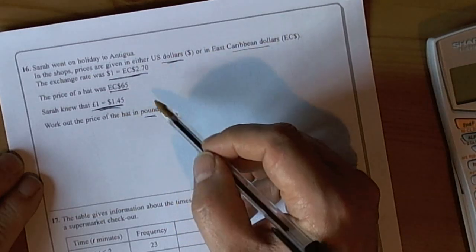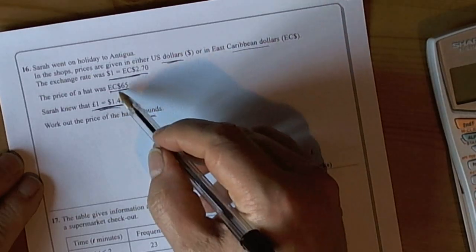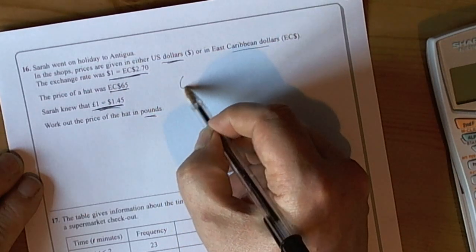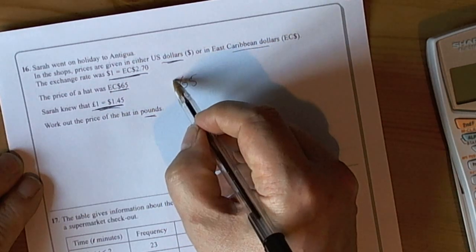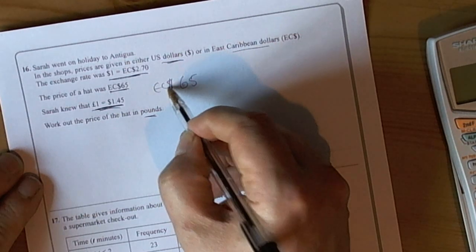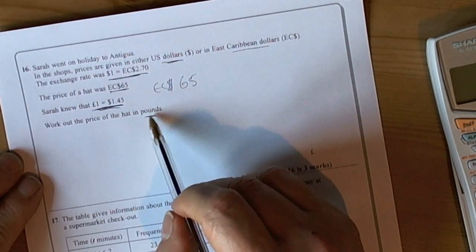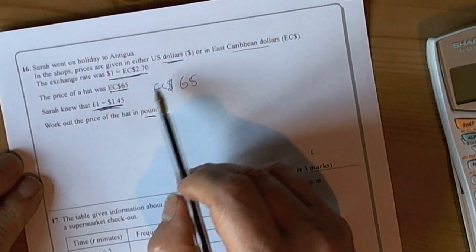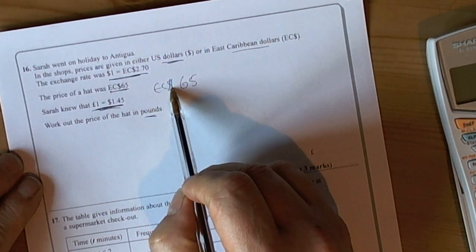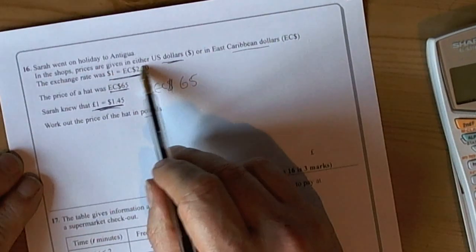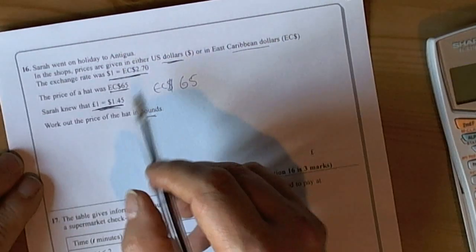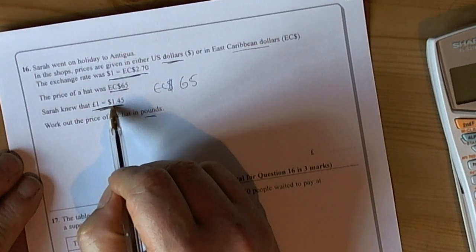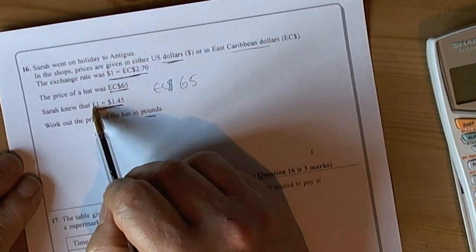We've got to look at that information and see how it's going to work. We've been told that we've got 65 East Caribbean dollars, so we know we're going to have to do something with that. We're trying to get the answer in pounds. There isn't a straight relationship between East Caribbean dollars and pounds, but there is a relationship between pounds and US dollars. So if we can get something in US dollars, we can then get back to pounds.